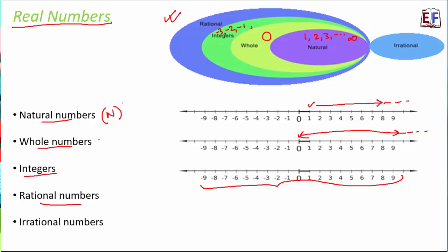Integers are denoted by capital Z — and you might be surprised why Z and not I. The letter Z is derived from the German word 'zahlen', which means to count. Since numbers are all about counting, integers got the letter Z.